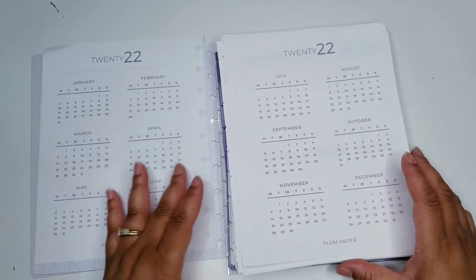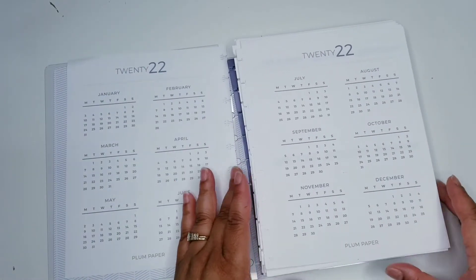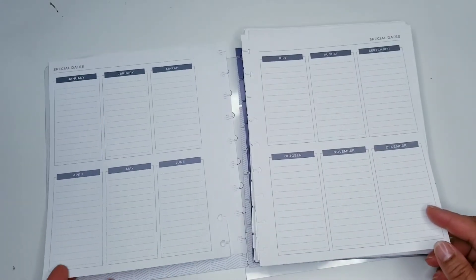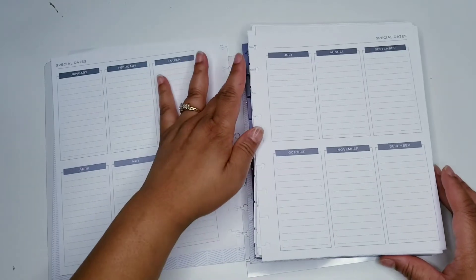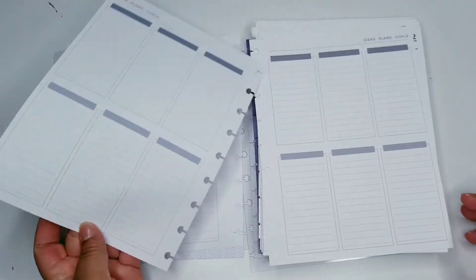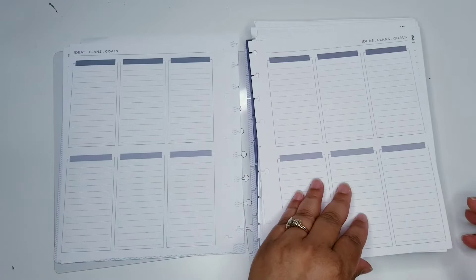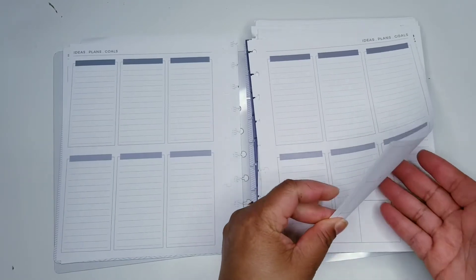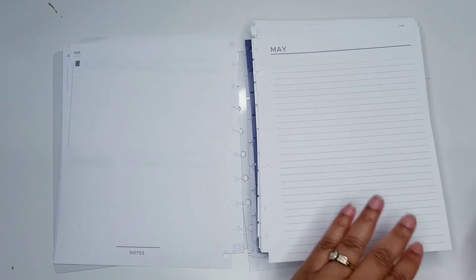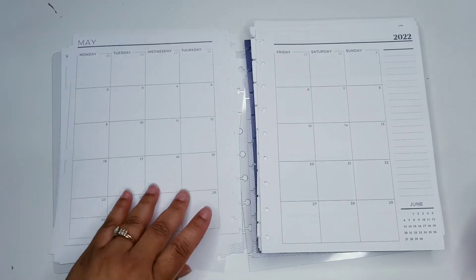And so we have the 2020, 2022 calendar. And then we have special dates here. I hope y'all can see that. Okay. And then we have plans, goals, and ideas on this one, which will work out perfectly for me. And then we have some lined paper and notes over here. Then we have our monthly view.